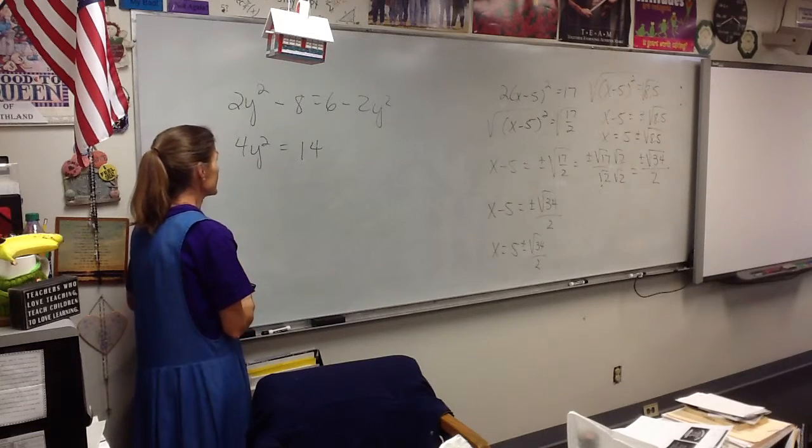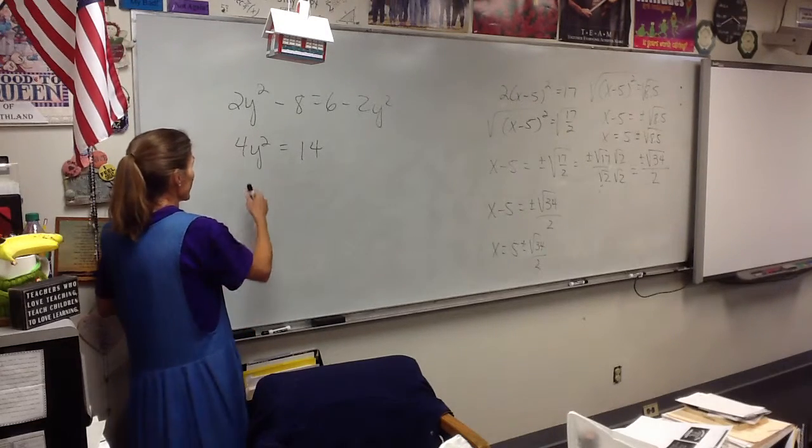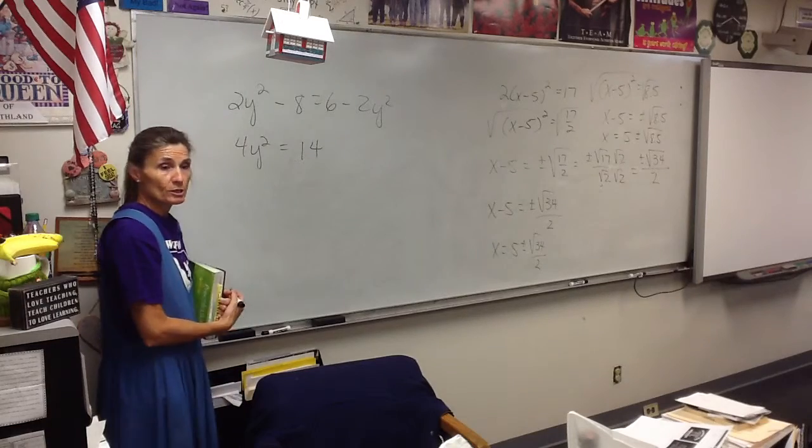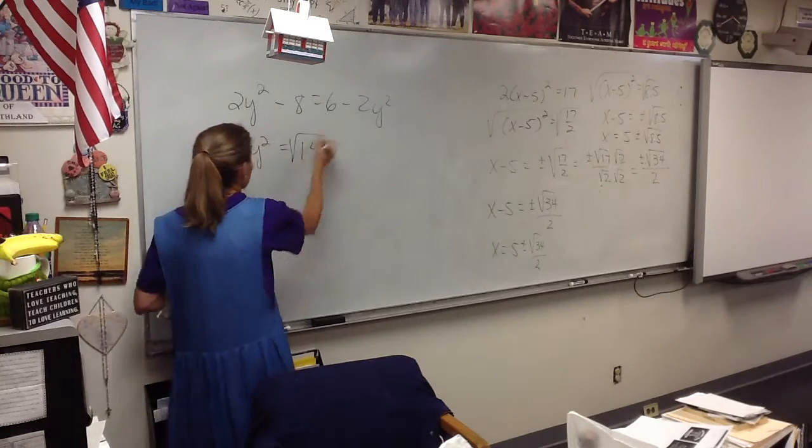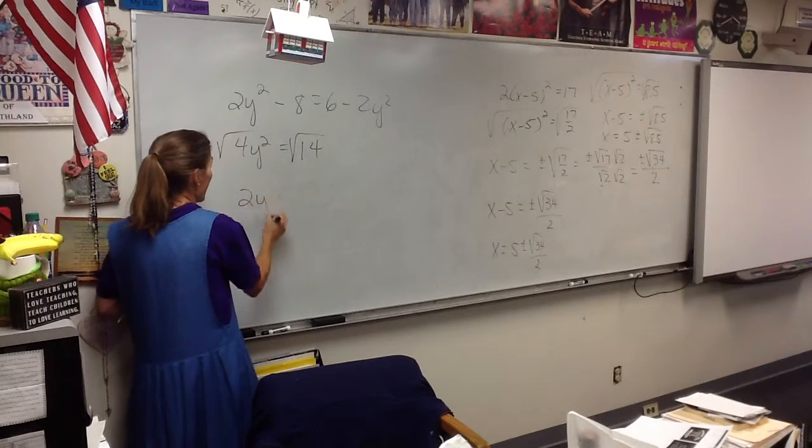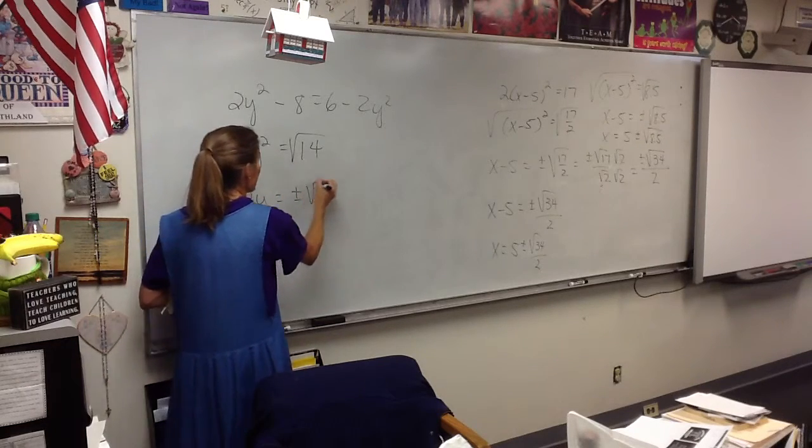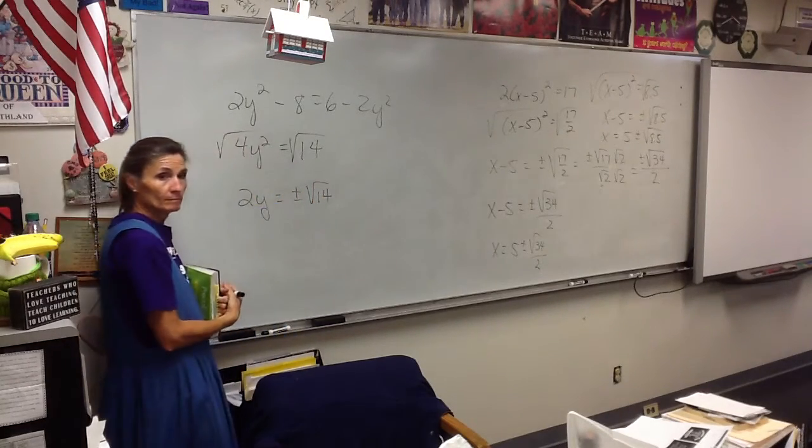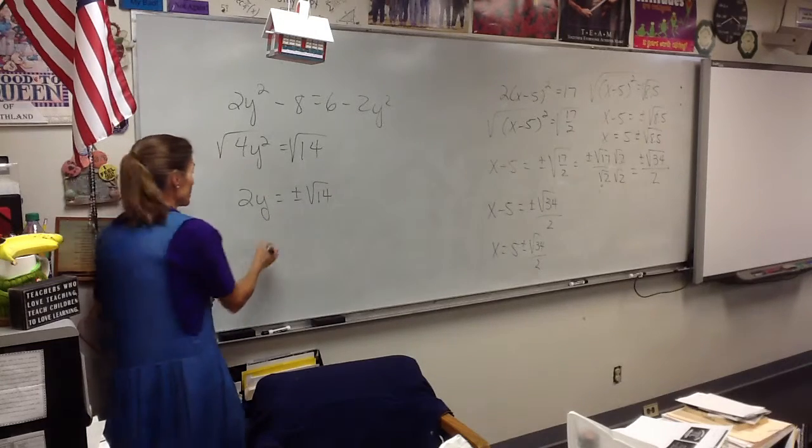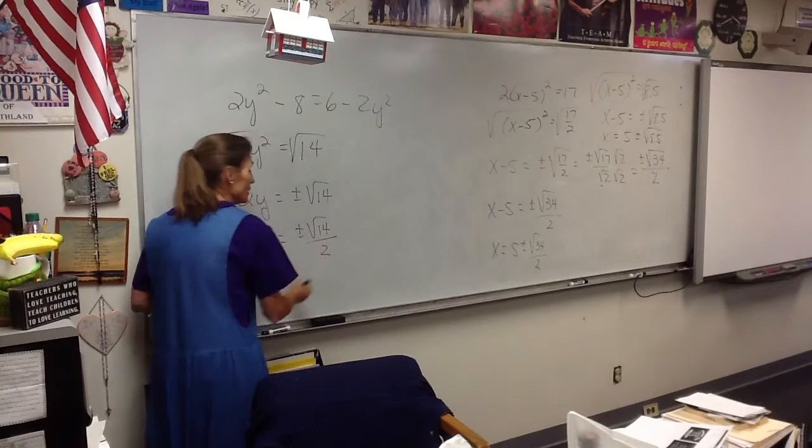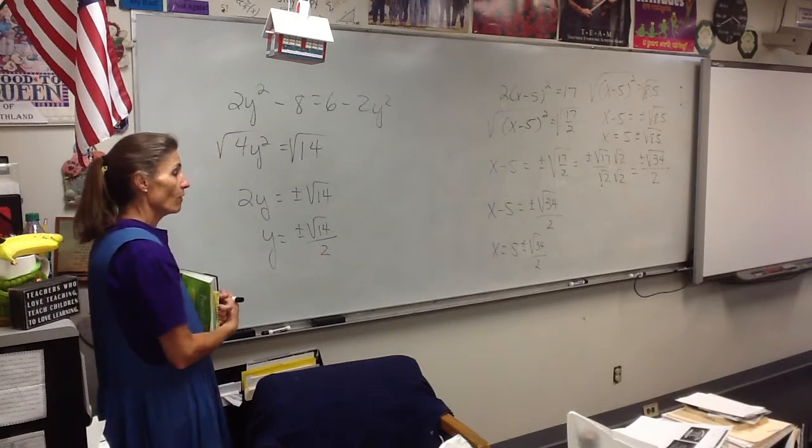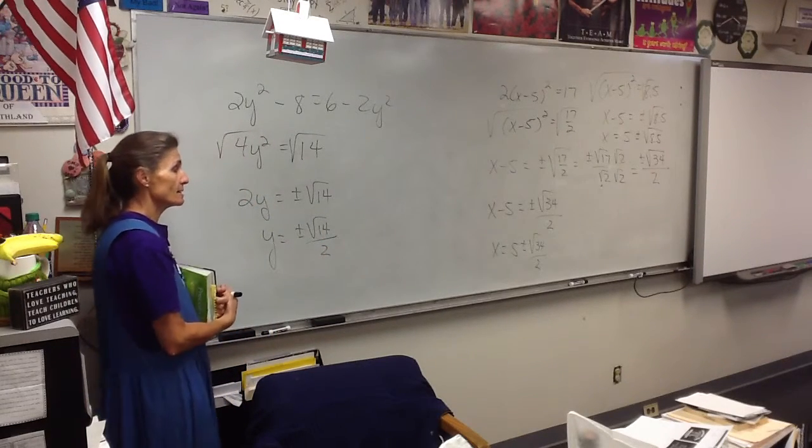Now this is an example, Ryan, where if you wanted to, you could just take the square root right now because that's a perfect square. So this would be 2y equals plus or minus root 14. So y equals plus or minus root 14 over 2. Did all that make sense? All those steps make sense, Franny?